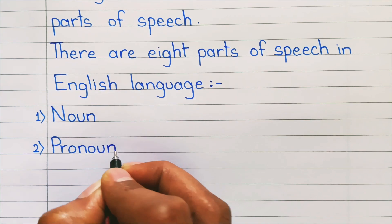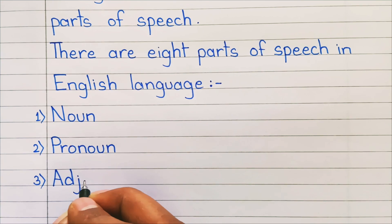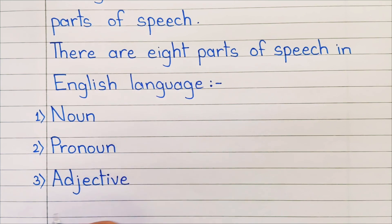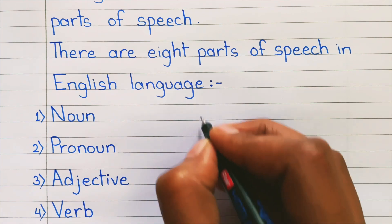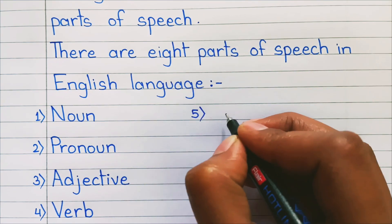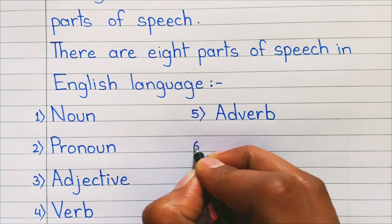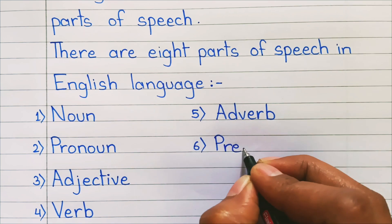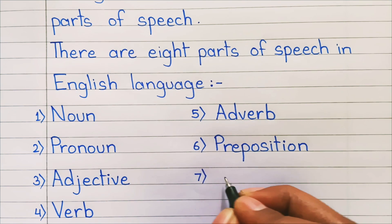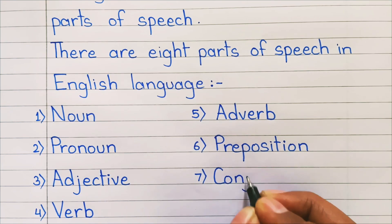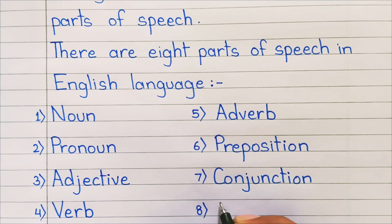There are eight parts of speech in English language. They are: 1. Noun, 2. Pronoun, 3. Adjective, 4. Verb, 5. Adverb, 6. Preposition, 7. Conjunction, 8. Interjection.